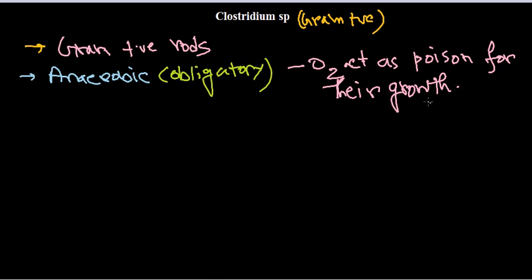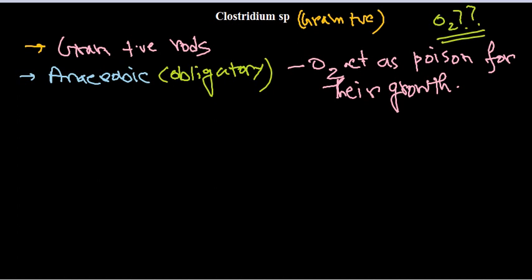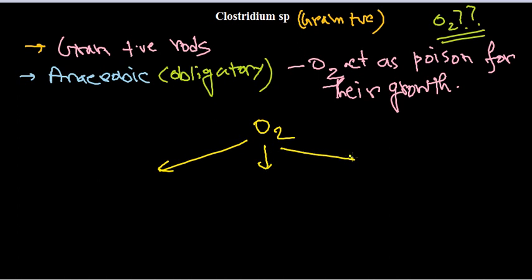Why does oxygen act as a poison? Because Clostridium species lack the enzymes needed to repair damage caused by oxygen. Oxygen can be converted into what we call superoxide radicals or free radicals. If oxygen takes only one electron, it converts into superoxide — a free radical that can damage cells.